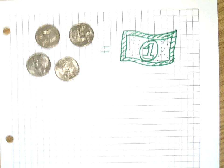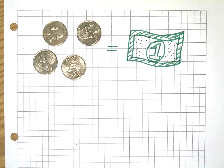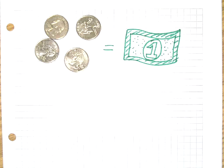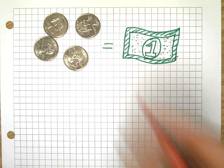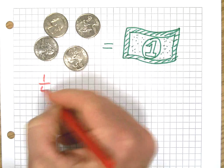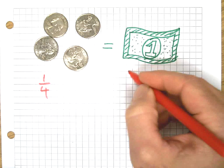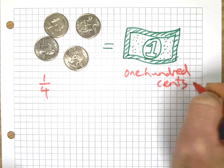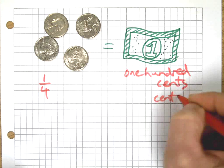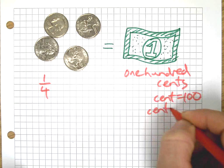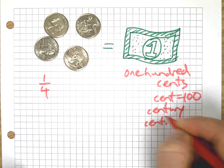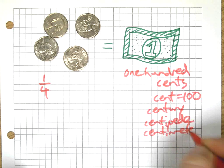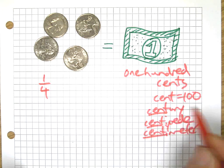Let's start with a money example. Everybody loves money, it's a good connection to make. You would all agree that four quarters equals a dollar, right? Let's translate this: these are each quarters, and a dollar is 100 cents. Cent means a hundred, like century, centipede, centimeter—all those words that start with cent represent a hundred of something.